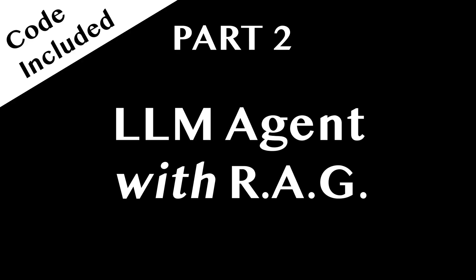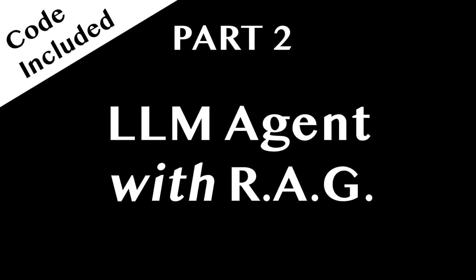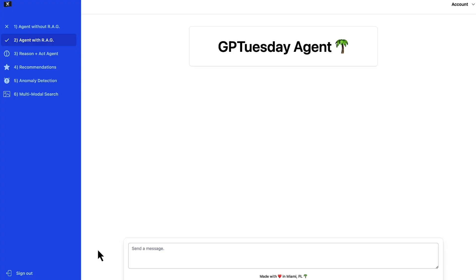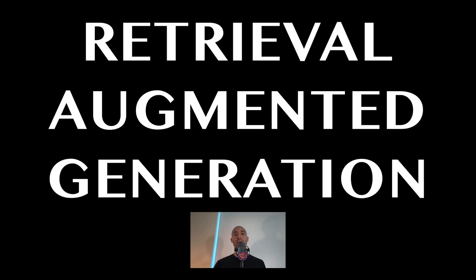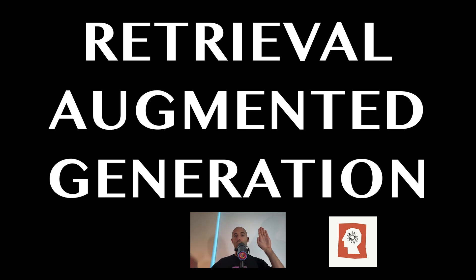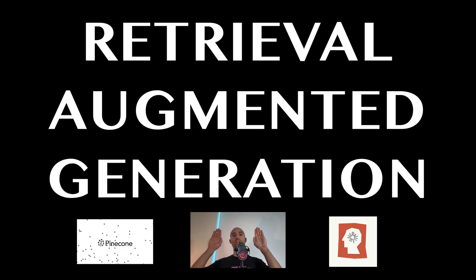In the next demo, we're going to combine this LLM agent with the use of vectors. Here we have an LLM agent that I've called the GPTuesday agent. Unlike the previous agent, this one uses RAG — Retrieval Augmented Generation — which is a technique that combines the use of an LLM with the use of a vector database.